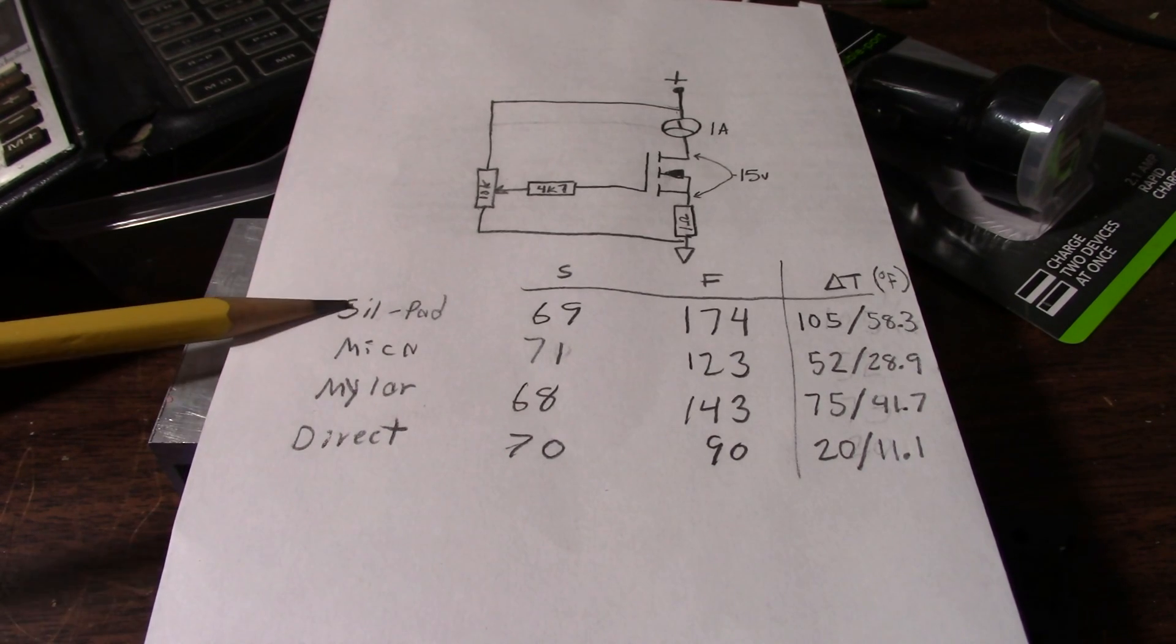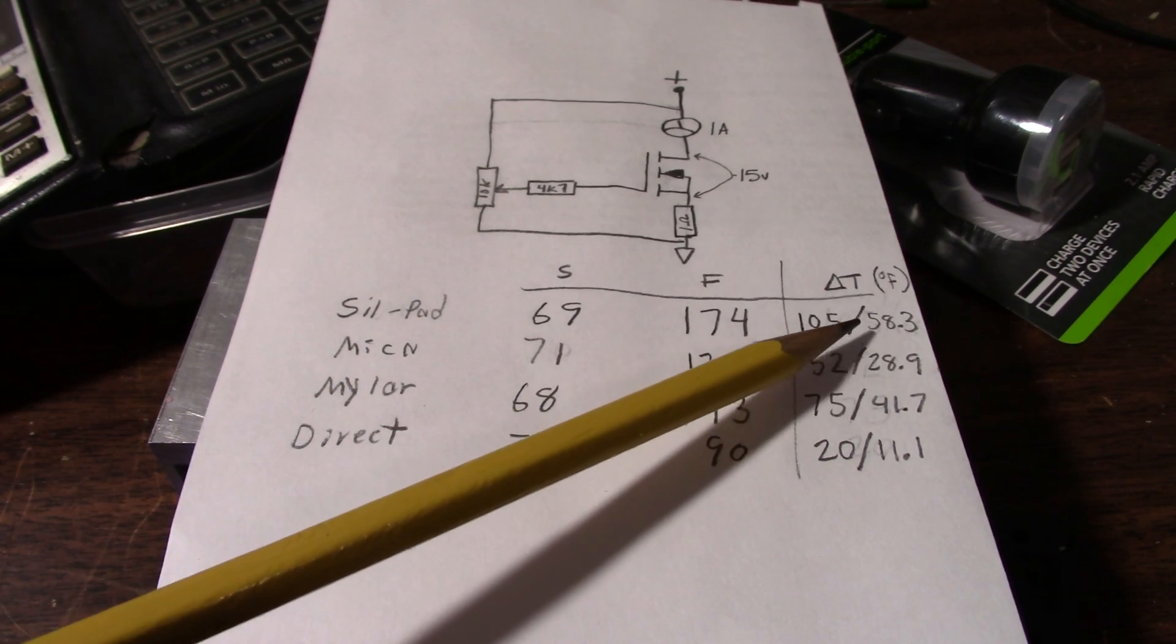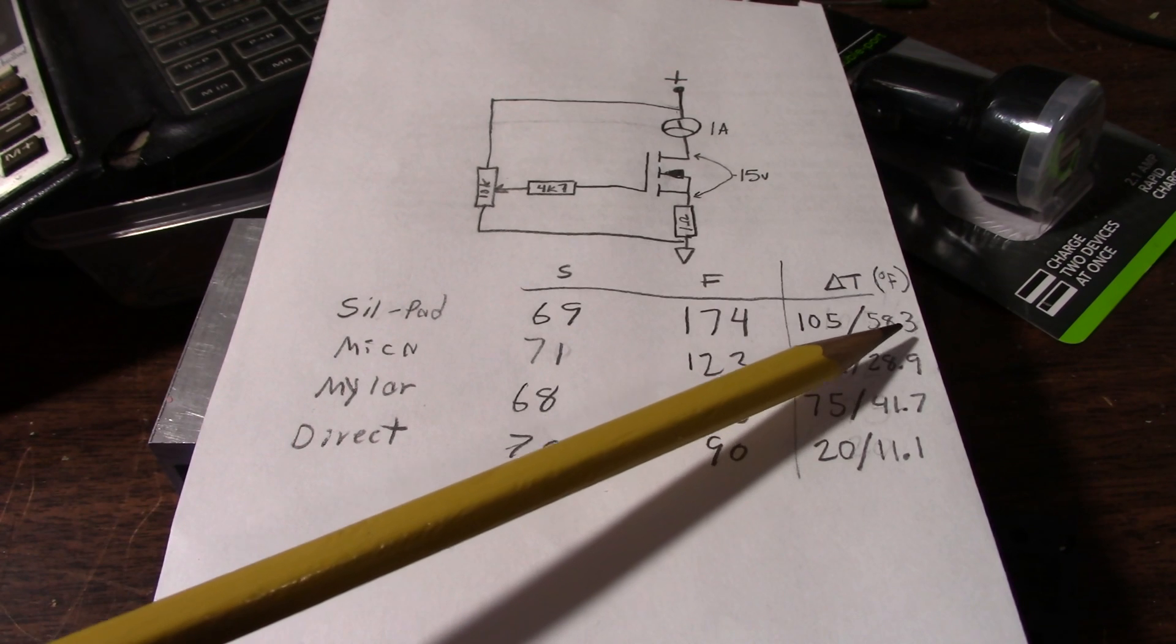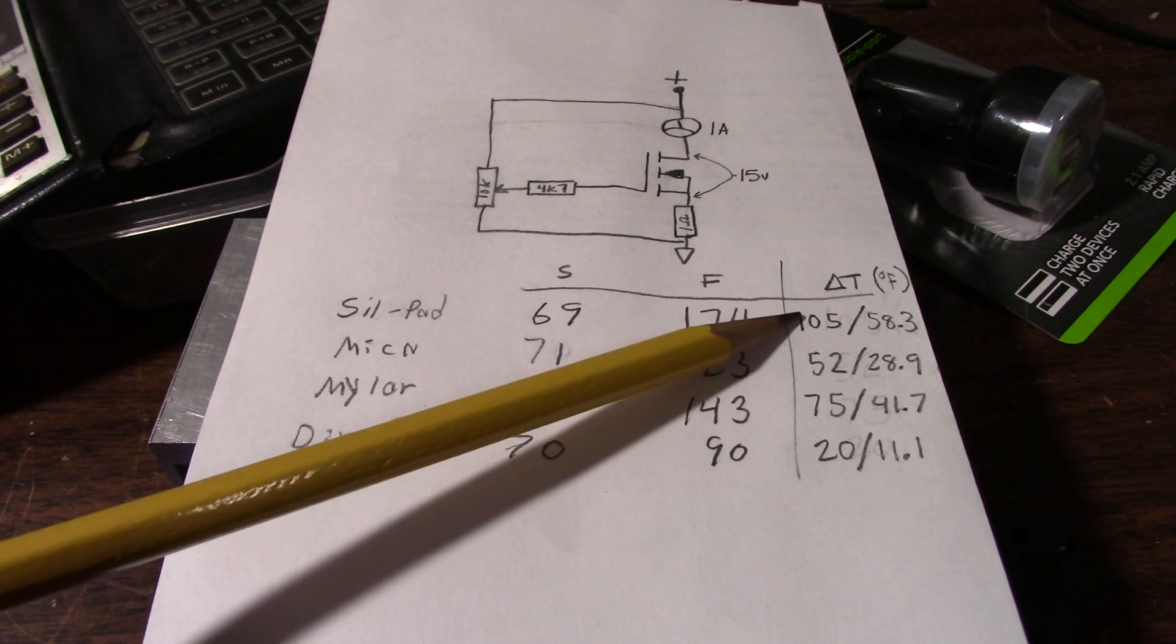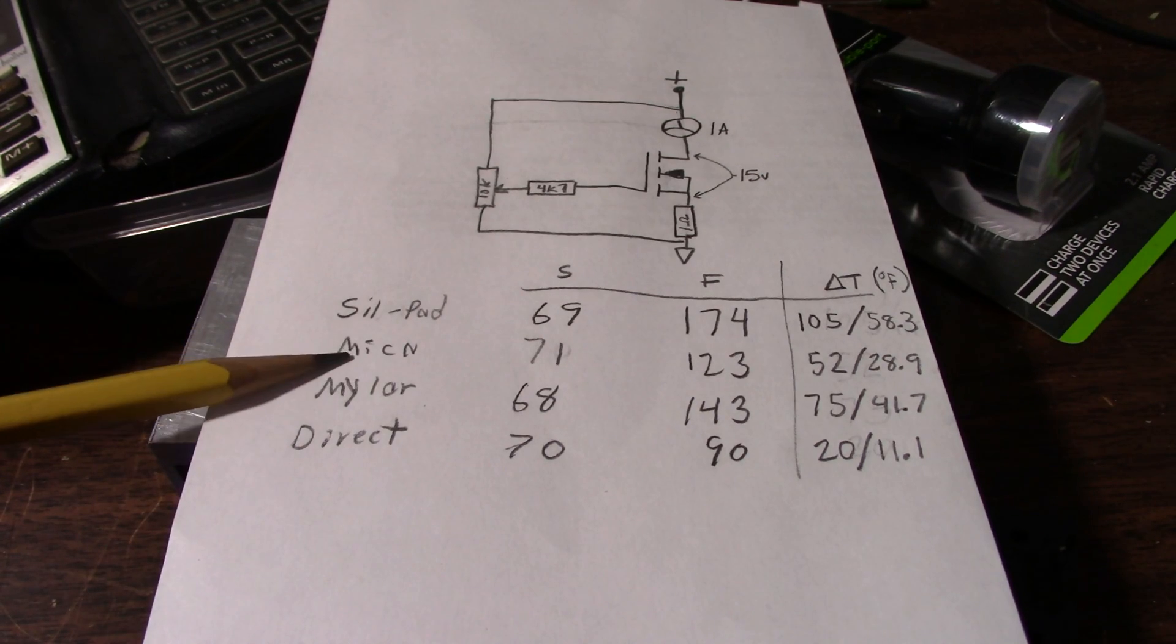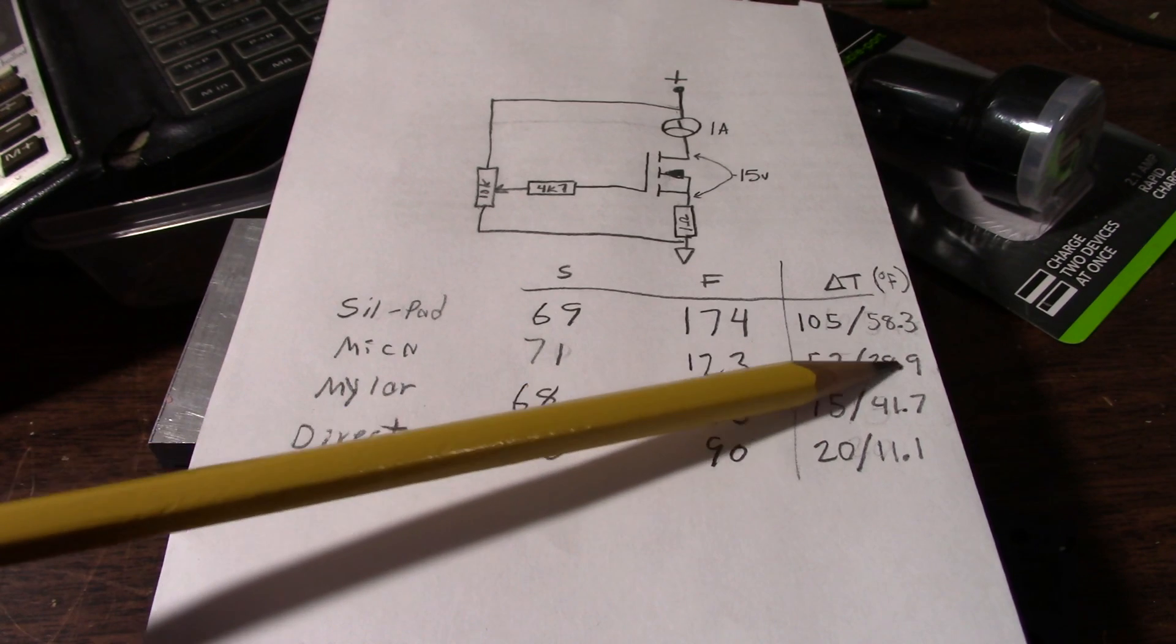So the SIL pad had a delta T of 105 or 58.3 degrees Celsius. As you can see, pretty horrible performance. The Mica did very well, 52 degrees, 28.9 in Celsius.